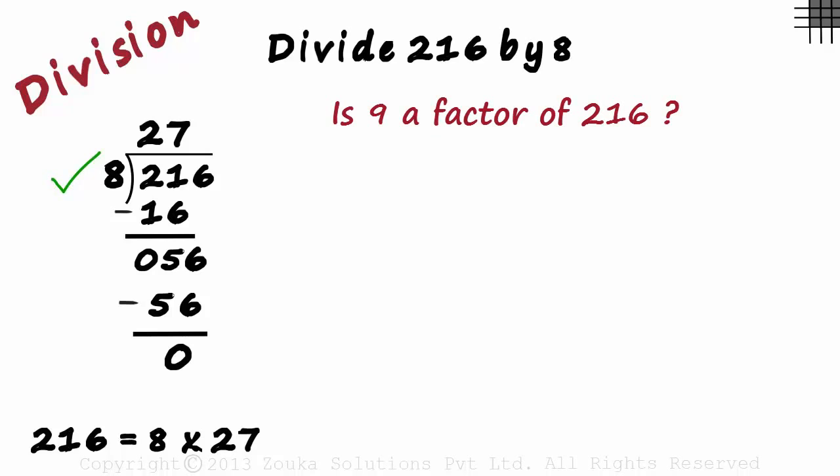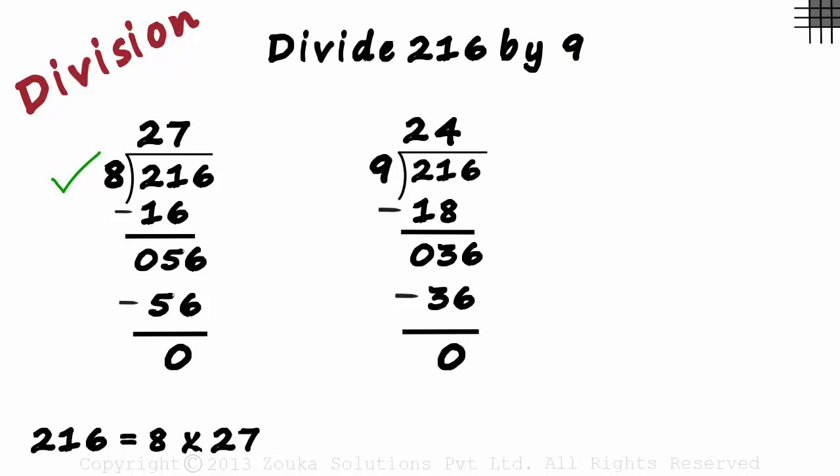Let's see if 9 is a factor of 216. We will have to divide 216 by 9. So after we finish our division process, we see that the remainder is 0.